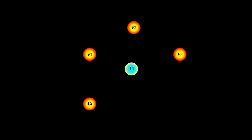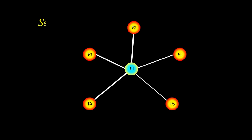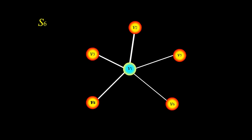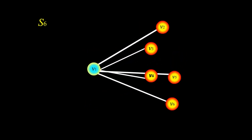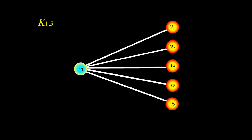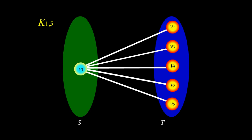For example, look at this graph — here are the vertices and here are the edges. This is the star graph S6. We can redraw this graph with one vertex on the left and the other vertices on the right. The vertex V1 on the left is adjacent to each vertex on the right. So this is the complete bipartite graph K_15.